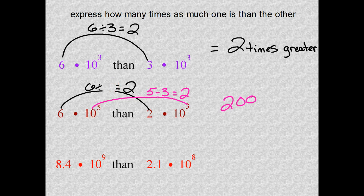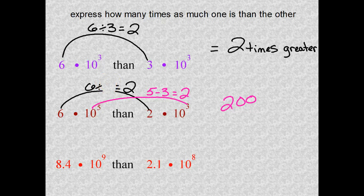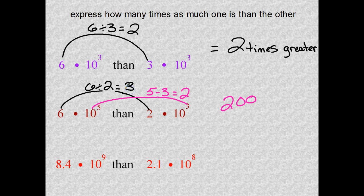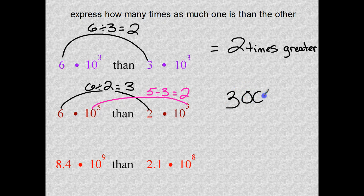Let me make that correction: 6 divided by 2 equals 3. That's the difference of your coefficients, and the difference in exponents gives two zeros, so the answer is 300 times greater. I apologize for that earlier mistake.